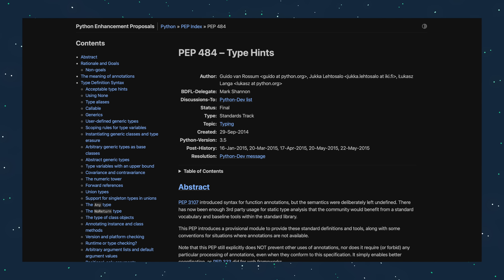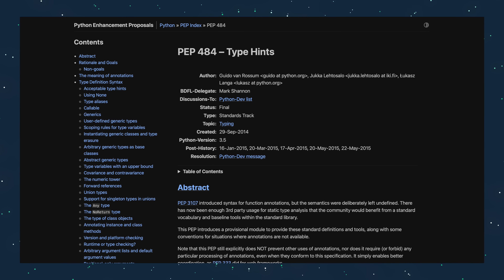First, let's take a quick look at where type hints came from and how to add them to your code. Type hints were introduced in Python 3.5 back in 2015 through PEP 484. Python is dynamically typed, which makes it flexible, but it also means it's easy to pass the wrong type and only discover it at runtime. The idea behind type hints is to provide optional typing to help with code clarity and tooling support, without forcing Python to be statically typed like Java or C++.